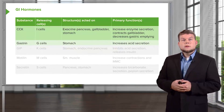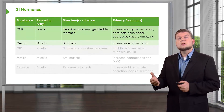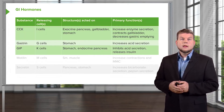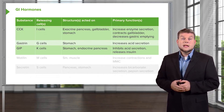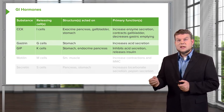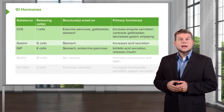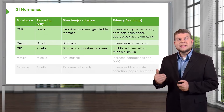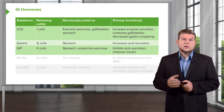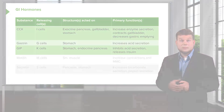Gastrin is released from G cells and this causes an increase in acid secretion. Gastric inhibitory peptide causes the inhibition of acid secretion as well as increasing insulin, and so sometimes this is called glucose insulinotropic peptide.